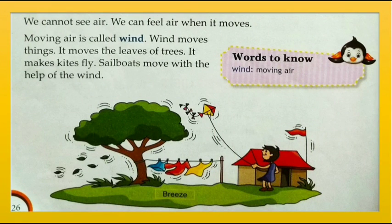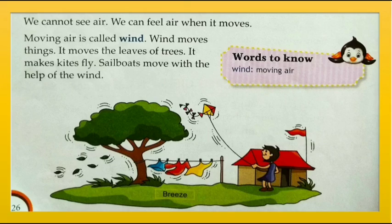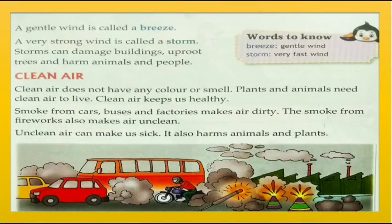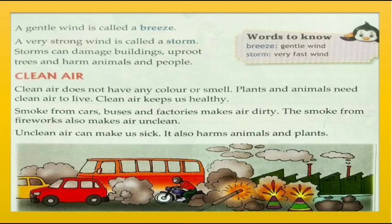We cannot see air, but we can feel it when it moves. Moving air is called wind. Wind moves things — it moves the leaves of trees and makes kites fly. Sailboats move with the help of the wind. A gentle wind is called a breeze. A very strong wind is called a storm. Storms can damage buildings, uproot trees and harm animals and people.